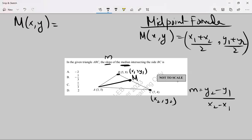...equal to 5 plus 7 is 12, 12 upon 2, comma 8 plus 4 is 12, 12 upon 2 again. The midpoint is 6 comma 6.